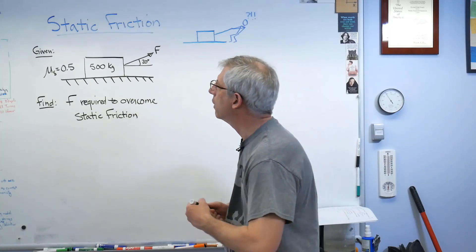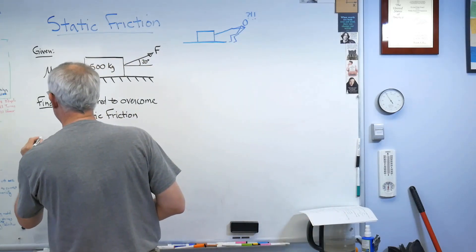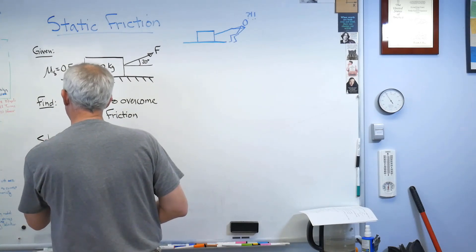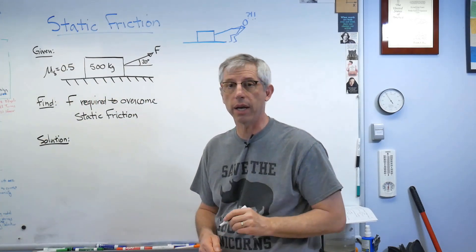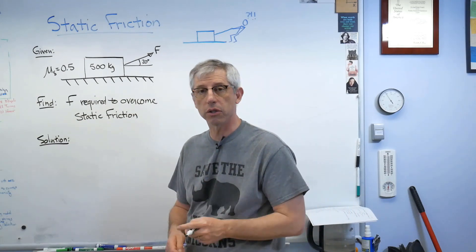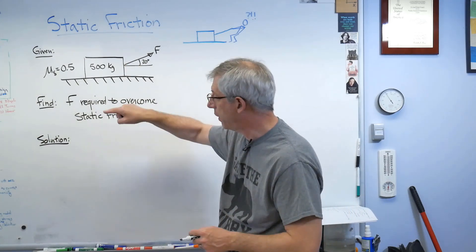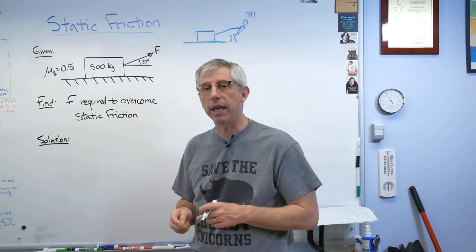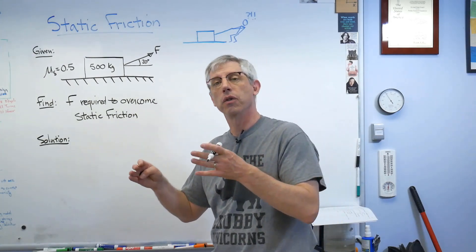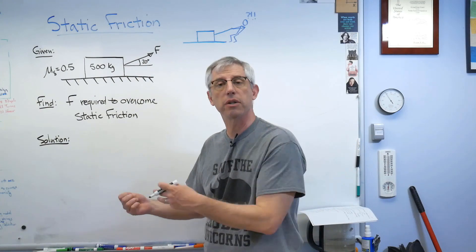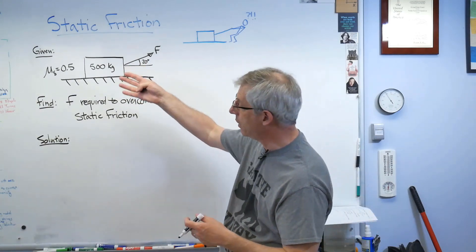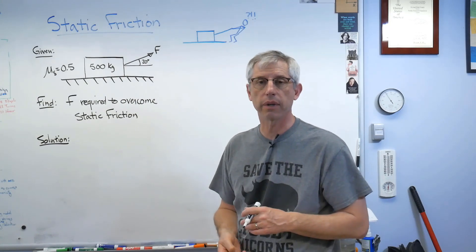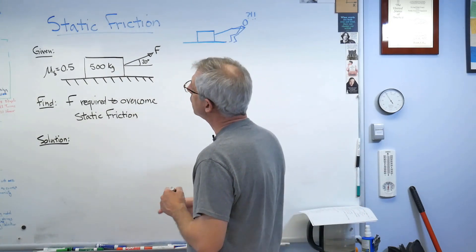So let's get started here. We'll go given and find solution. Now, if you're one of my students here at Purdue, you know about GFSA format: given, find, solution, answer. There's given, find, solution. We'll get answer here in a little bit. Now, GFSA is a format. The recipe is a process. So we execute the recipe within the GFSA format. They work together.